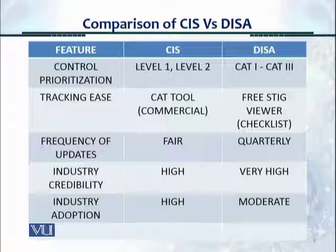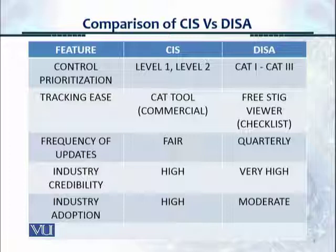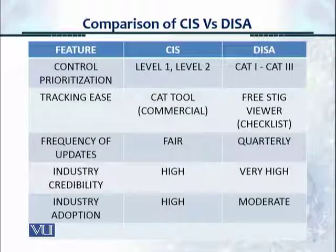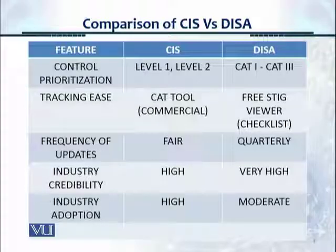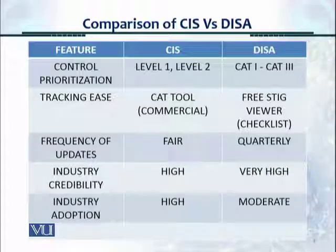For tracking ease, one particular benchmark usually has dozens or hundreds of controls. In CIS, the CAT tool is commercial, and without it, it's quite difficult — you have to extract all the controls, put them in an Excel sheet, and then track them. In DISA, there's a free STIG viewer in which you can create a checklist, and it's all there, so you don't have to create more checklists.